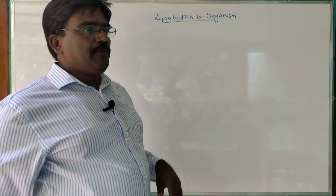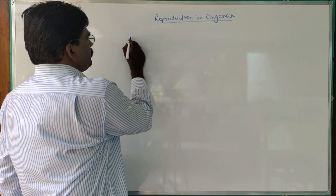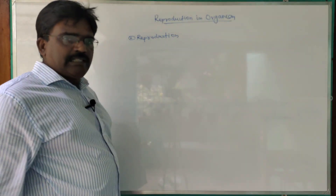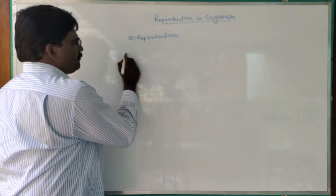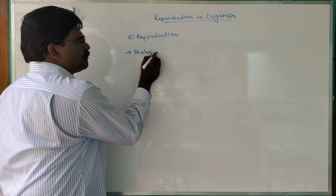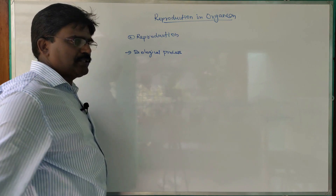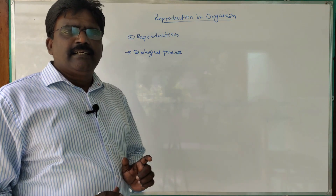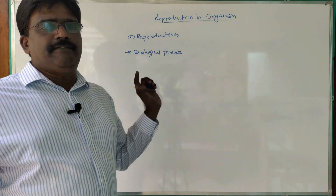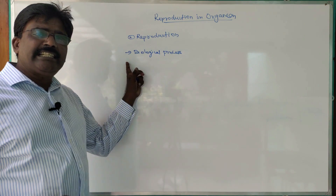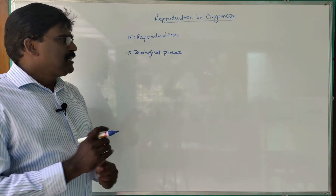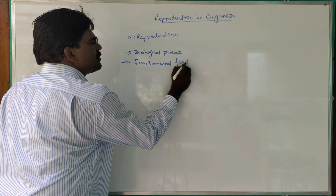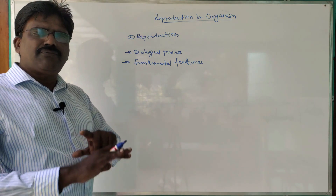Here we have to know what is reproduction. As everybody knows, this is a biological process to continue the life of a species, so that the species never become extinct in this world. It is a very essential biological process and also a fundamental feature of all living organisms.